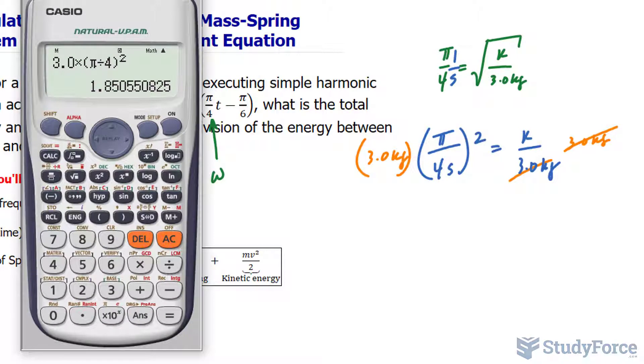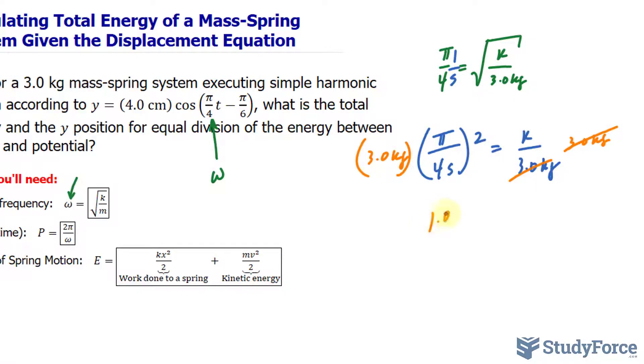It should give us 1.85 kilograms per second squared is equal to k. Now, normally when we're dealing with a spring constant, the units are in newtons per meter. But over here we have kilograms per second squared. To rectify that, we can use a little math trick by multiplying the top and the bottom by meters per meter.